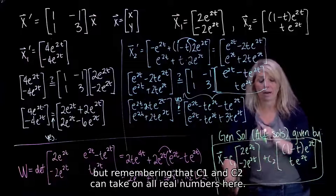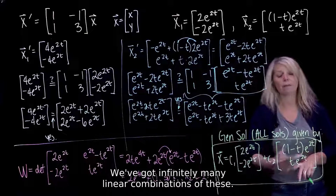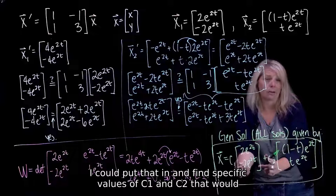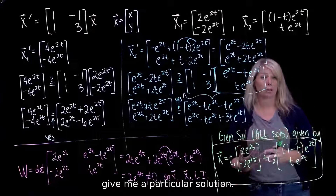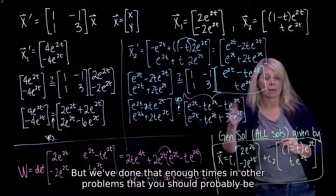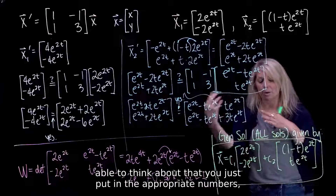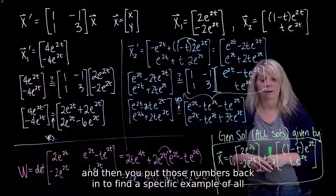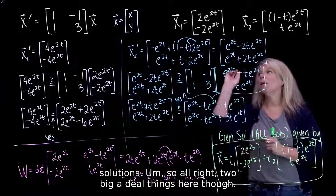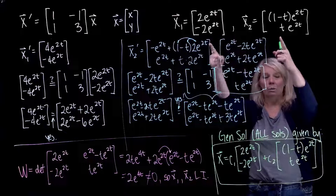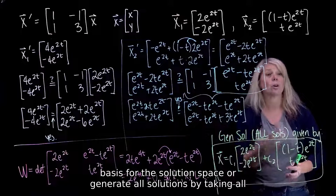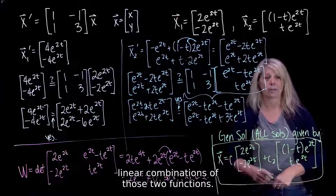c1 and c2 can take on all real numbers, giving infinitely many linear combinations. If I had an initial condition, I could put that in to find specific values of c1 and c2 for a particular solution. You just put in the appropriate numbers, figure out c1 and c2, then substitute back to find a specific solution. The key takeaway: the dimension of the system equals the number of linearly independent solutions needed to form a basis for the solution space — or to generate all solutions by taking all linear combinations of those functions.